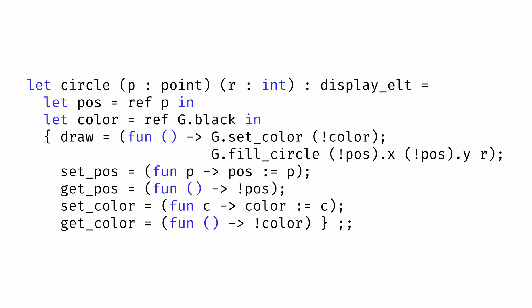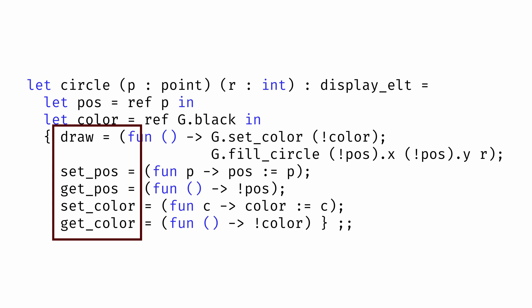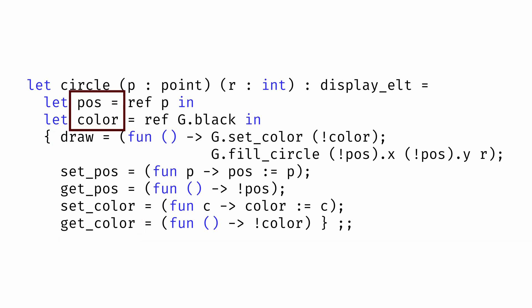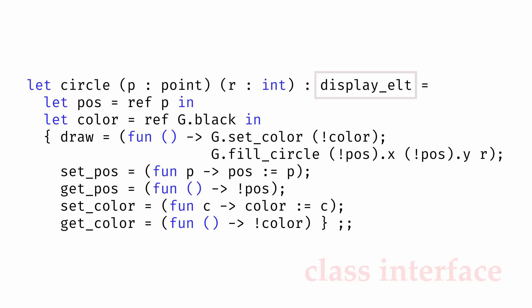The object-oriented programming paradigm has particular terminology for what we've created here. This data structure that potentially combines data as well as functions for working with that data is an object. The functions contained within the object are known as methods, and we say these methods are invoked when we call them. The state variables stored by the object, in this case the position and color, are the object's instance variables. The class interface specifies what methods the object provides, and the class specifies a way to create a new object, otherwise known as instantiating the object.